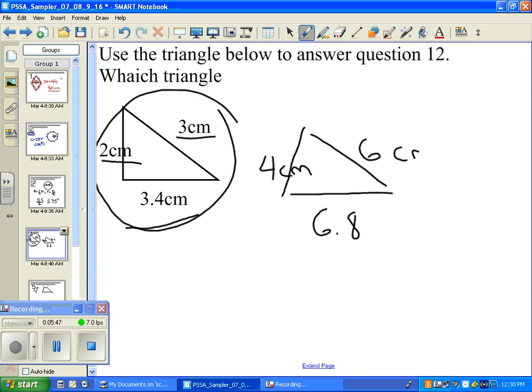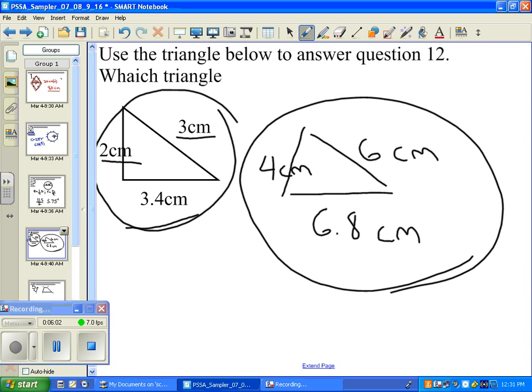And we took 2 times the 3 centimeters. That's 6 centimeters, and 2 times 3.4 is 6.8 centimeters. And that's our answer. It would be letter A.